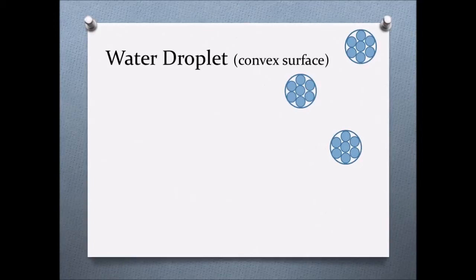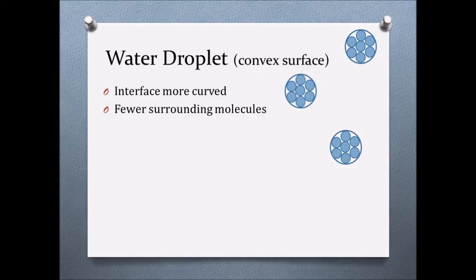The droplet is an example of a convex curved interface, and it is arranged in such a way that the inner molecules are surrounded by fewer particles, which means that the net intermolecular forces of attraction are weaker than in the equivalent flat surface.